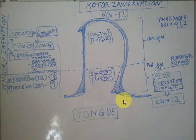There is one exception to motor innervation: one muscle in the tongue is not controlled by nerve 12. That muscle is the palatoglossus. It is the only muscle not innervated by cranial nerve 12; instead it is innervated by the vagus nerve, cranial nerve 10. That is the one exception — otherwise all motor innervation is nerve 12.